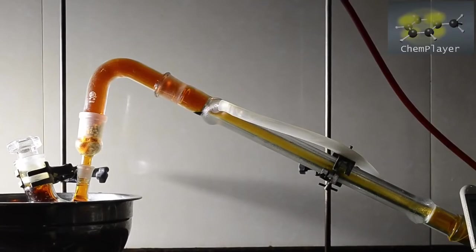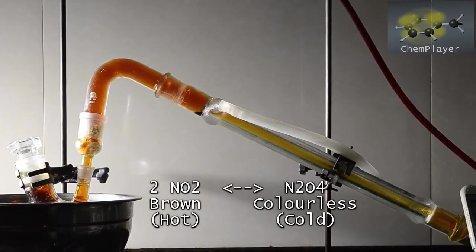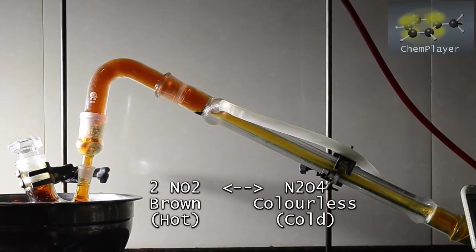Nitrogen dioxide actually exists in an equilibrium between the single nitrogen dioxide species and the dimer species which is known as dinitrogen tetroxide.